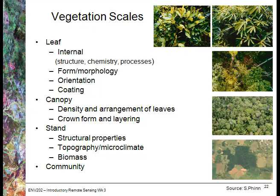Stepping up from the individual leaf scale — where we have internal structure, chemistry and processes, form and morphology such as casuarina leaves compared to a broad flat palm leaf, orientation, and waxy coatings — we can then look at the canopy and how it affects radiative transfer. This involves the density and arrangement of individual leaves, crown form, and layers within the structure. Stepping up further to a stand, we look at structural properties, topography, microclimate, and vegetation biomass.